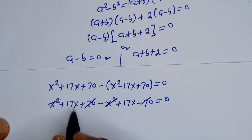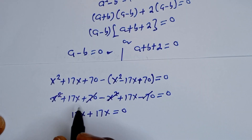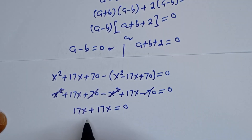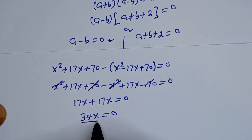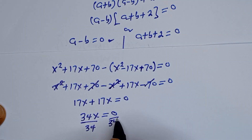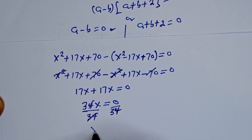We have 17S plus 17S equals 0, that is 34S equals 0. Dividing both sides by 34, S is equal to 0.